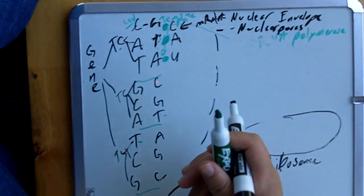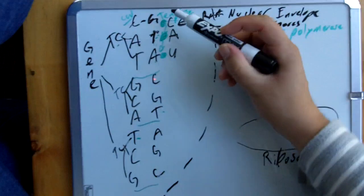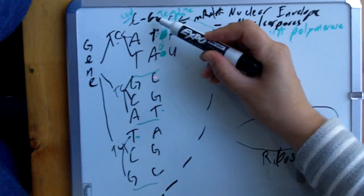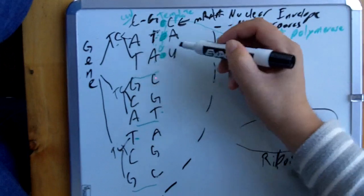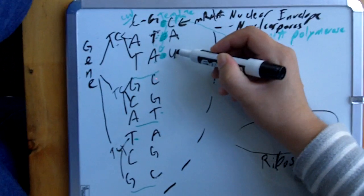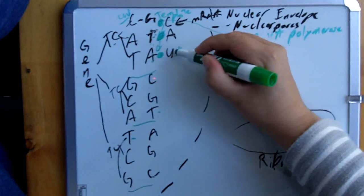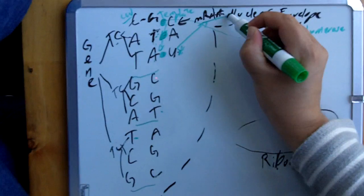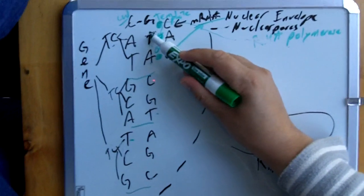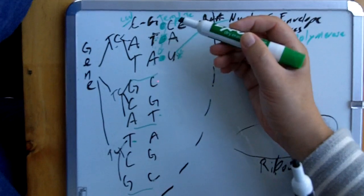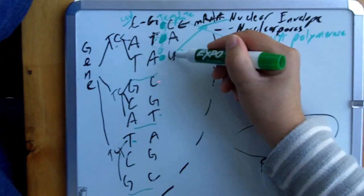mRNA stands for messenger RNA. Can DNA have U in it? No — it can only have the letter T. But can RNA have the letter U in it? Yes. So if you ever see something with the letter U, it must be RNA. If you see the letter T, it must be DNA. These two strands here are DNA, and we're creating a new strand of RNA.